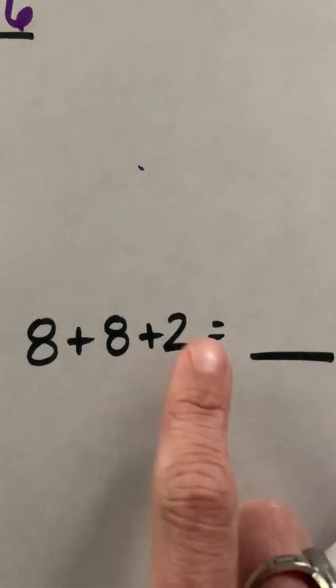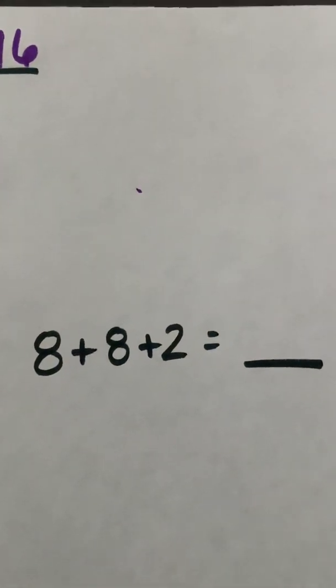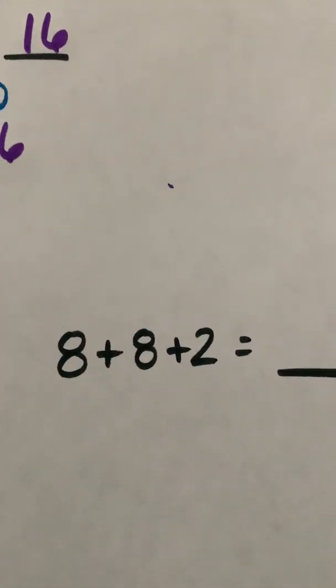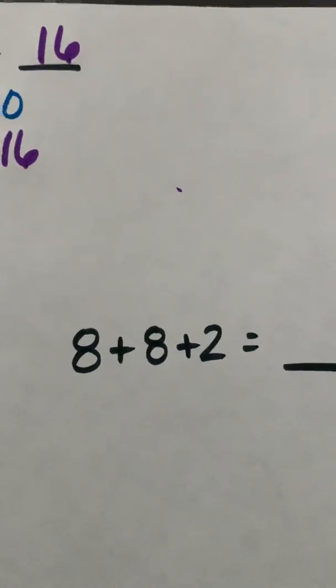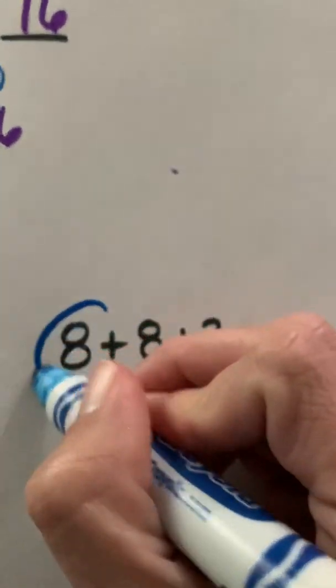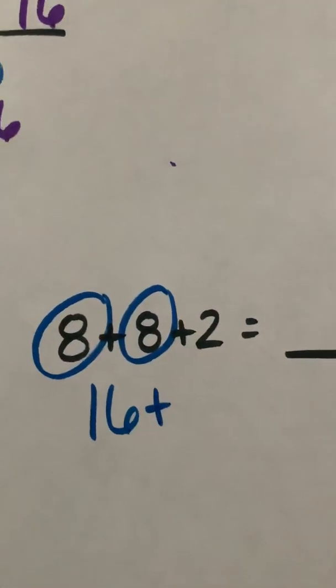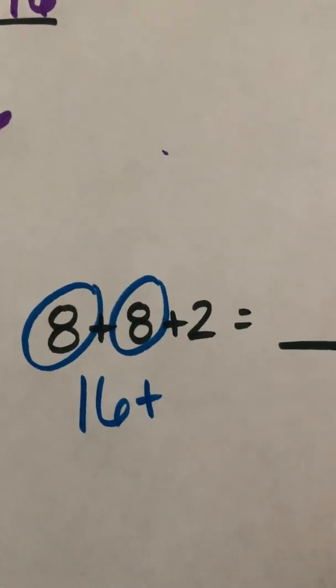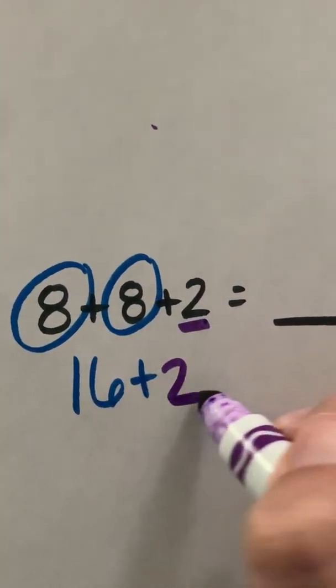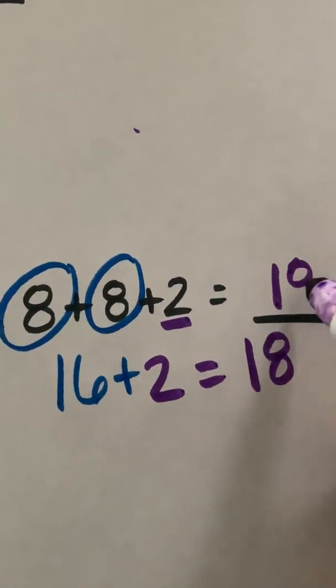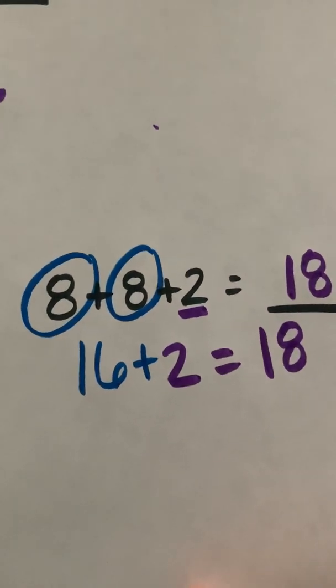We got 8 plus 8 plus 2. I'm looking here and I realize that I have doubles here. So I could add my doubles. I know that 8 plus 8 is 16, and 16 plus 2 gives me 18. So the sum of 8 plus 8 plus 2 is 18.